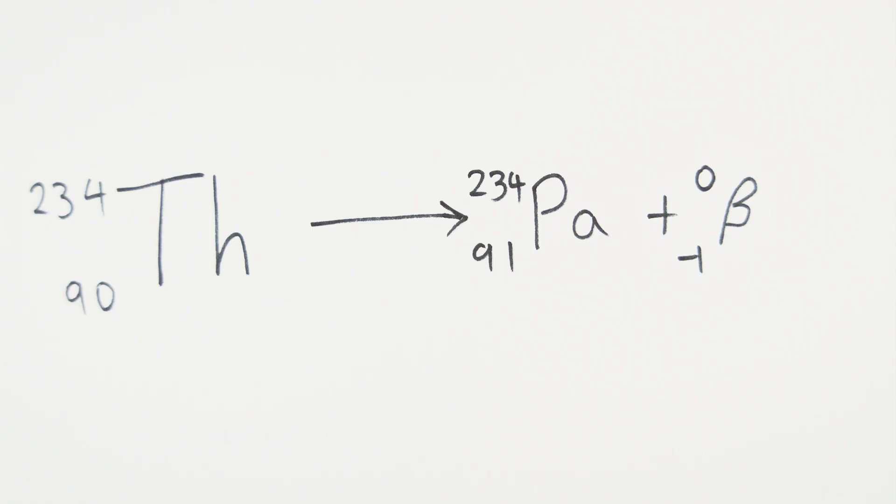As you can see, the beta particle has a minus one as its atomic number to represent the additional proton that was added. Seems a little counterintuitive, but that's just the way it is.